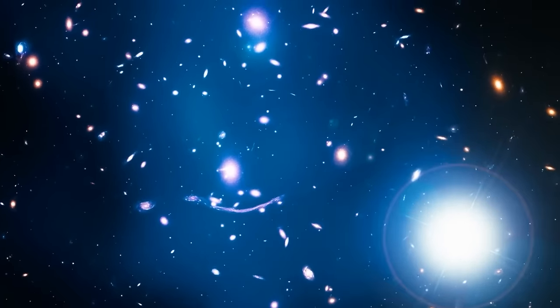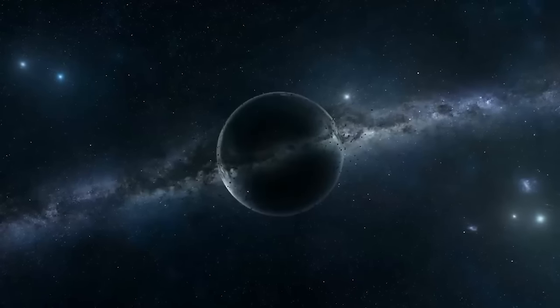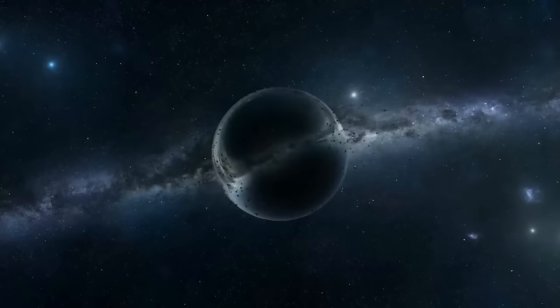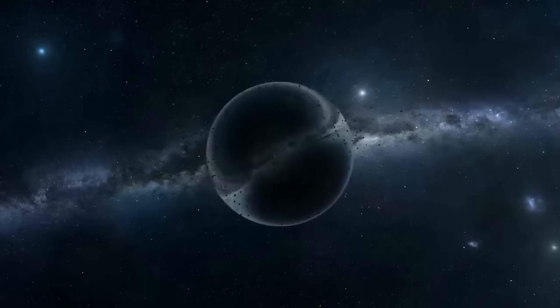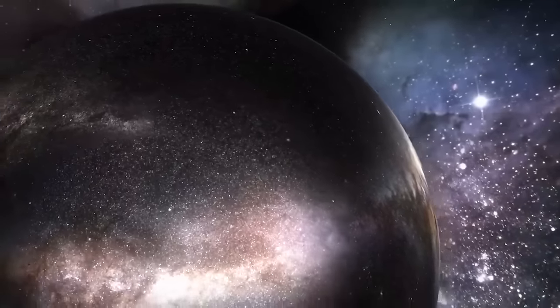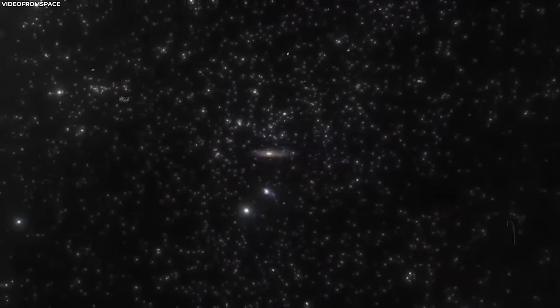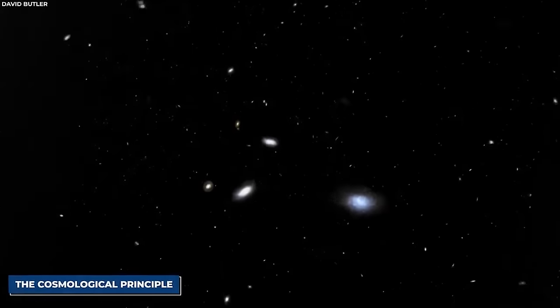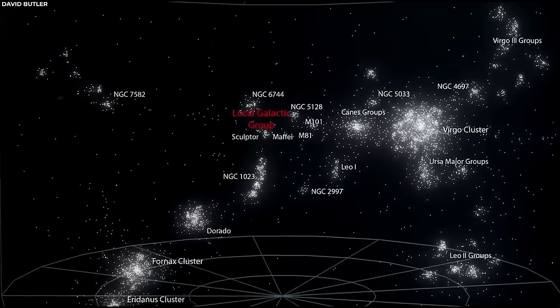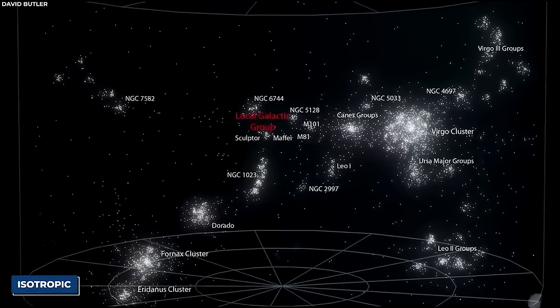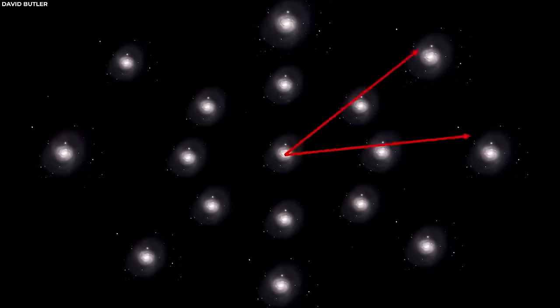Now the concept of the edge of the universe is a mind-boggling topic that has fascinated scientists, philosophers, and thinkers for ages. We have all sorts of theories about what lies beyond, but the truth remains elusive. However, there are three theories that stand out. The first theory is that the universe goes on forever with no end in sight, based on the cosmological principle which states that the universe is isotropic.